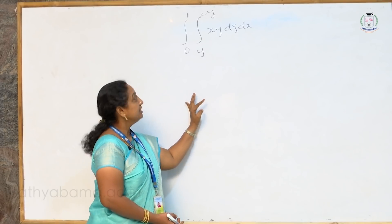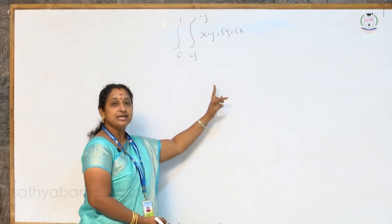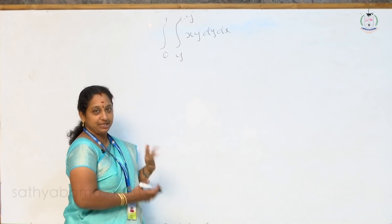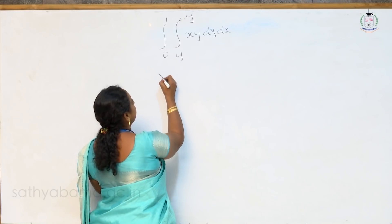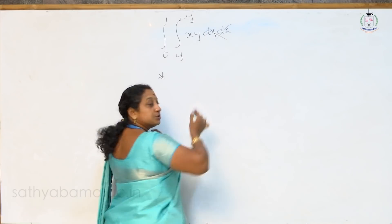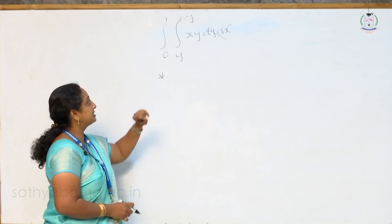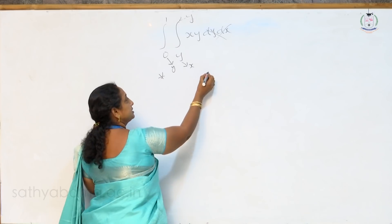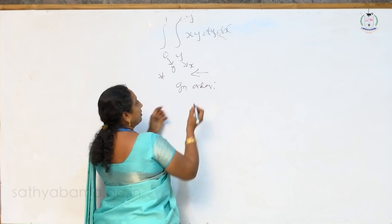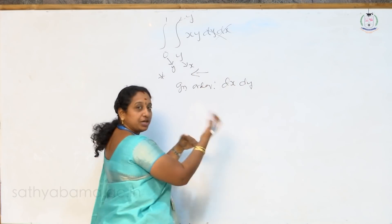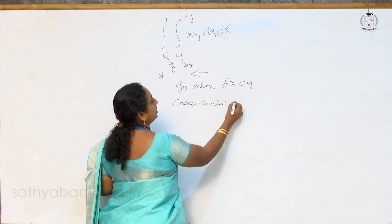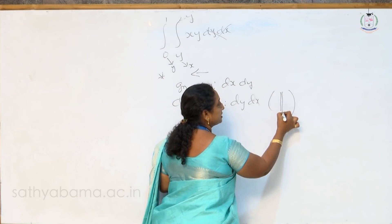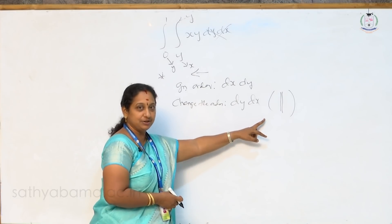Next problem: change order of integration — double integral 0 to 1, y to 2 minus y, xy dx dy, and hence evaluate. This region looks almost similar to the previous problem in terms of limits, but the region of integration may differ. First step: look into the limits — they are in terms of y, so these are the x limits. Therefore the other one is the limit for y. The given order of integration is dx dy. To change the order means dy dx — first integrate with respect to y and then with respect to x.